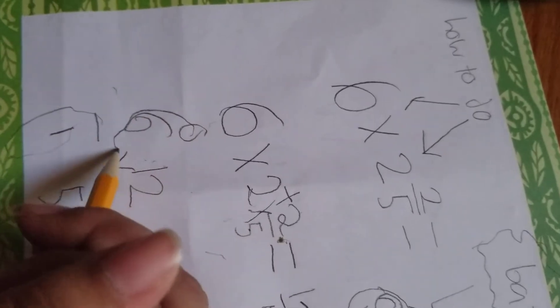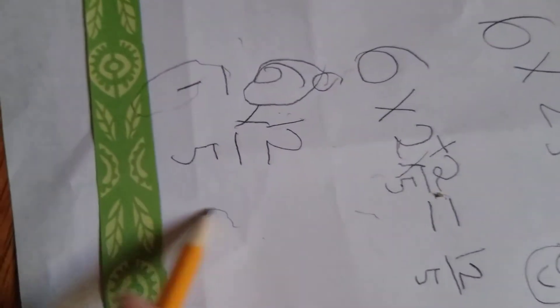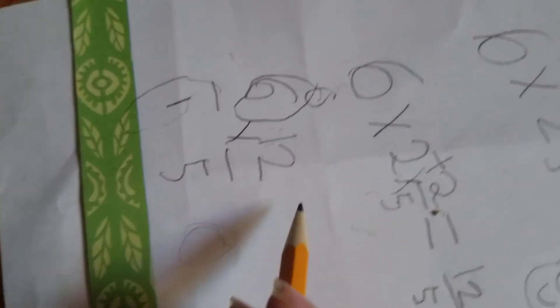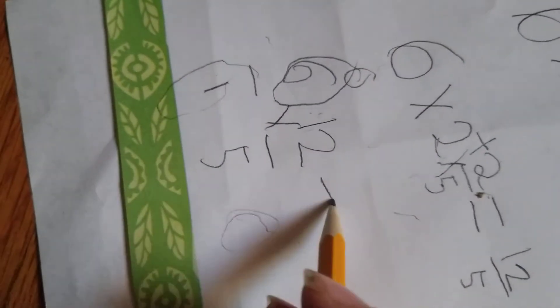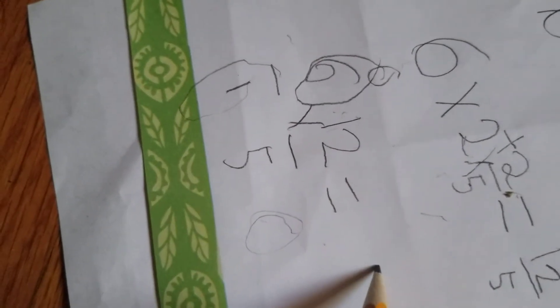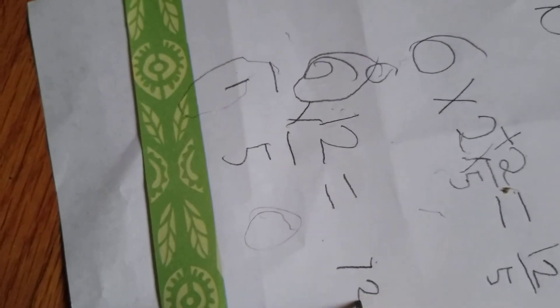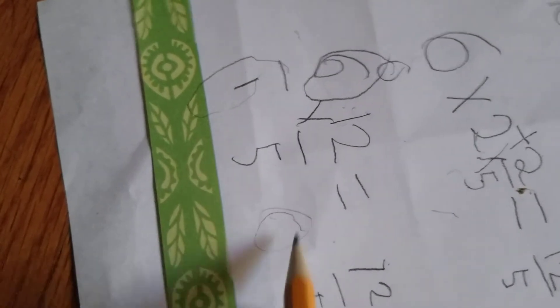Six times twelve equals seventy-two over five. Sorry that my handwriting is kind of bad because I'm holding my phone in one hand and drawing with the other.